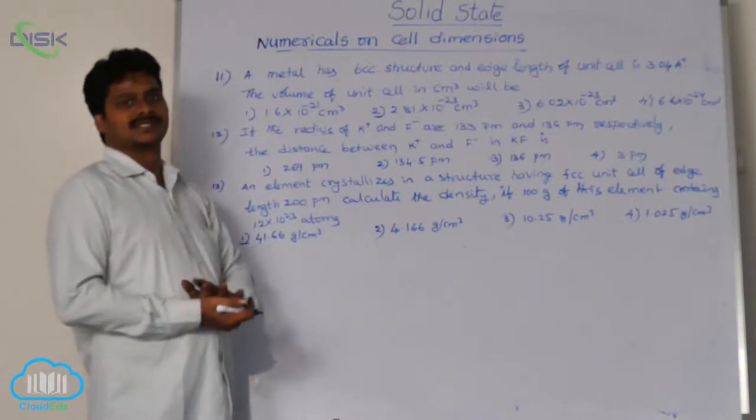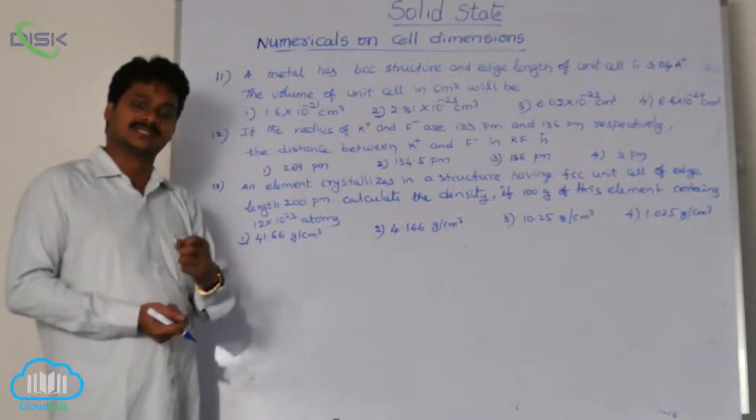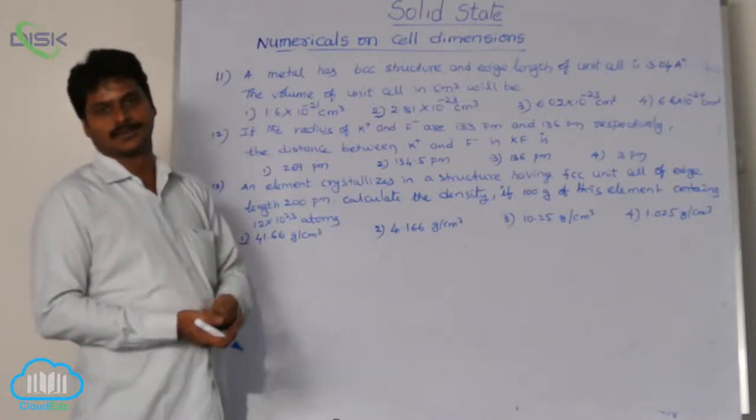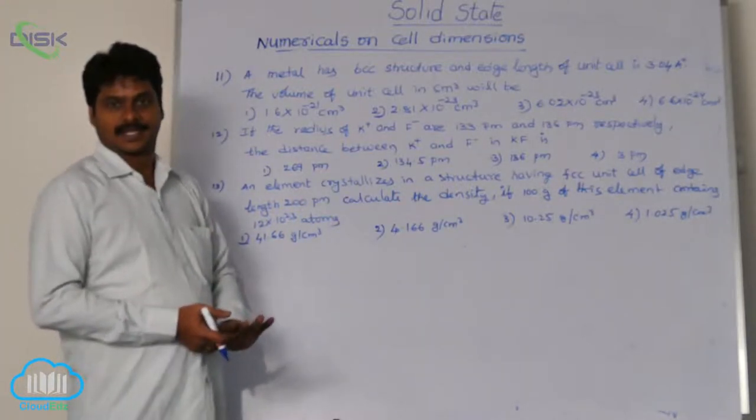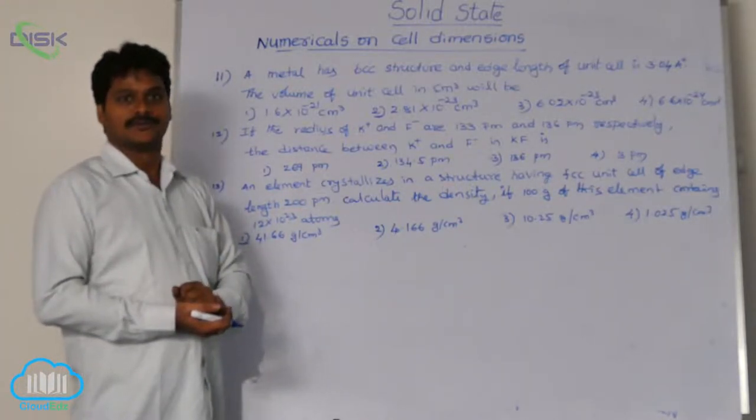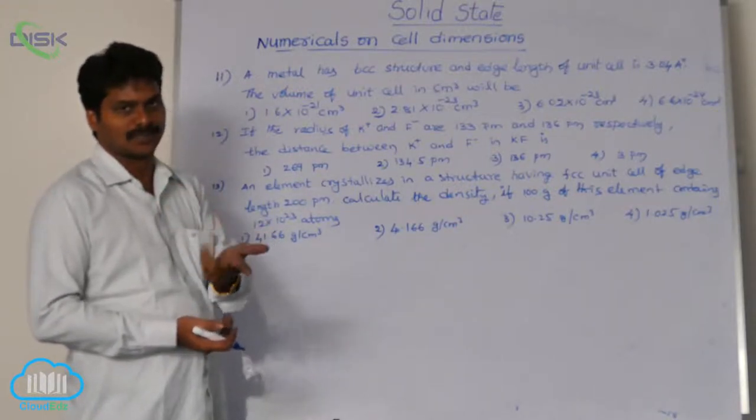Whatever be the unit cell of a cubic system, that may be simple cube, face centered cube, edge centered, body centered, or simple cube. The volume of unit cell, what is the formula? For a cubic system, A cube.